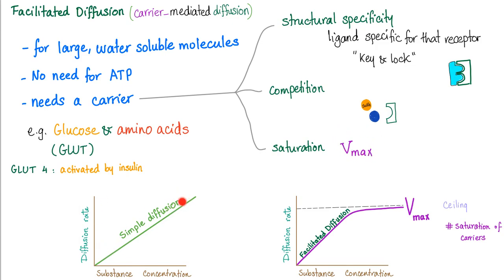Saturation, meaning Vmax. In simple diffusion, as the substance concentration increases, the diffusion rate increases towards infinity. But with facilitated diffusion, we have Vmax. There is a ceiling, a maximum called Vmax, velocity maximum. Why? Because all of your carriers are saturated at the Vmax point.